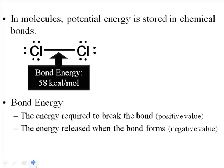Bond energy is the energy required to break a bond, but it's also the energy released when the bond forms. The way we can tell the difference when it's written down is whether there's a positive or negative value. A positive value, much like on your bank statement, means a cost of something — it requires 58 kilocalories per mole to break these bonds. If we see a negative number, that's like a credit on your bank statement — negative 58 kilocalories per mole would mean 58 kilocalories were released when the bond forms.